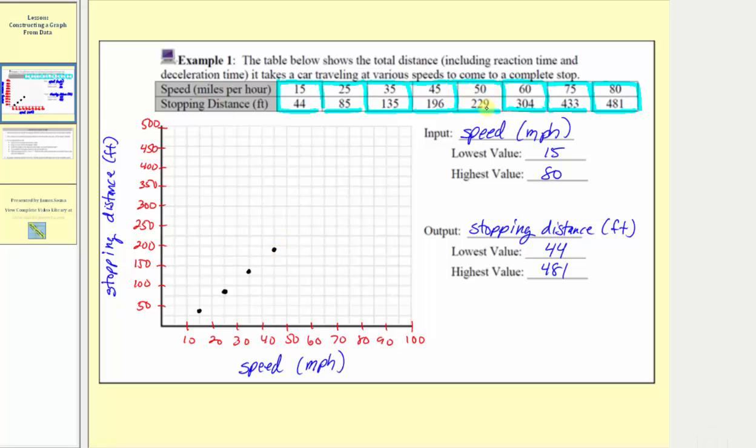Next ordered pair would be 50 comma 229. Input of 50, output of 229 is going to be below 250, maybe here. Next we have 60 comma 304. Input of 60 is here. Output of 304 would be approximately here.